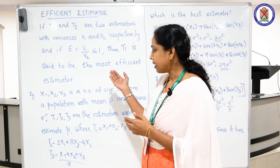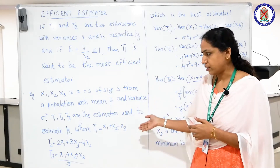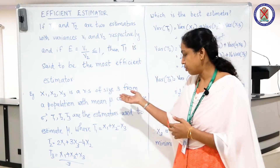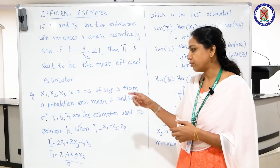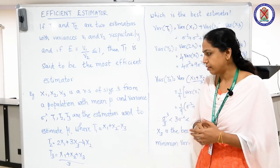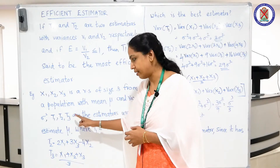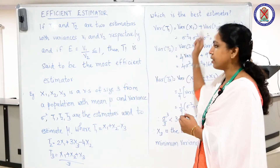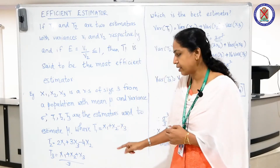We will see one example. There are three estimators. The population has mean mu and variance sigma squared, and we have samples x1, x2, x3 — so the sample size is 3. Three estimators are given: t1 = x1 + x2 - x3, t2 = 2x1 + 3x2 - 4x2 (i.e. 2x1 + 3x3 - 4x2), and t3 = (x1 + x2 + x3)/3. We have to find which is the best estimator.